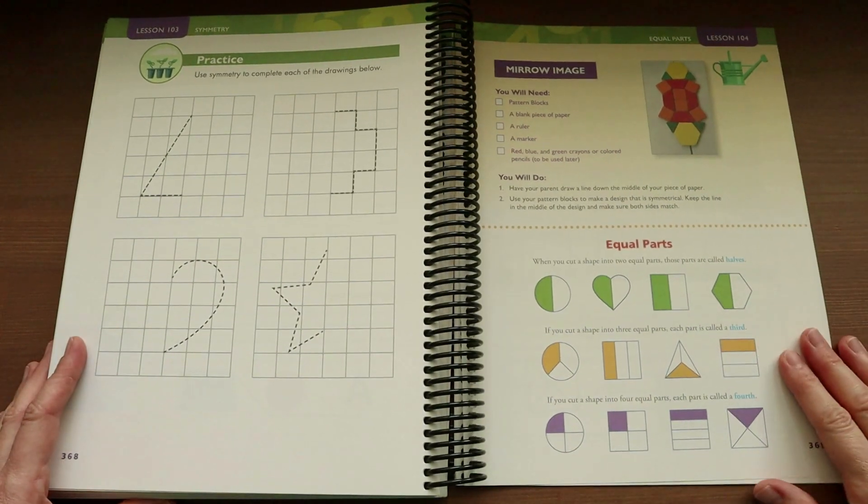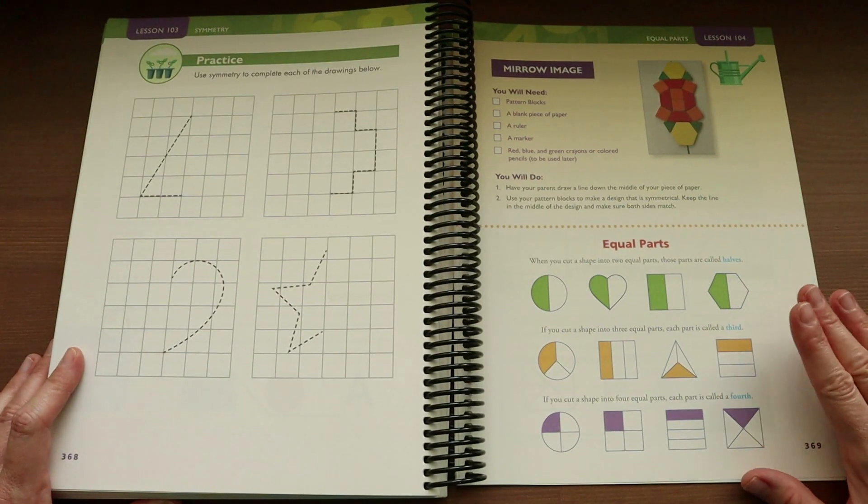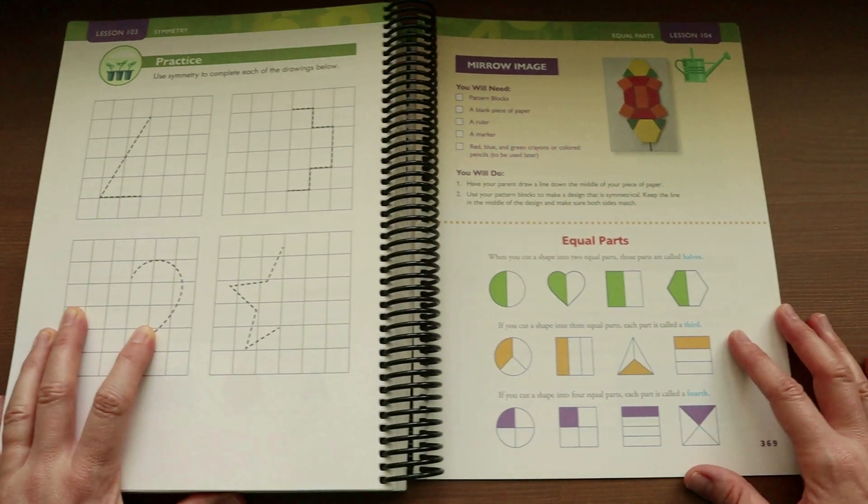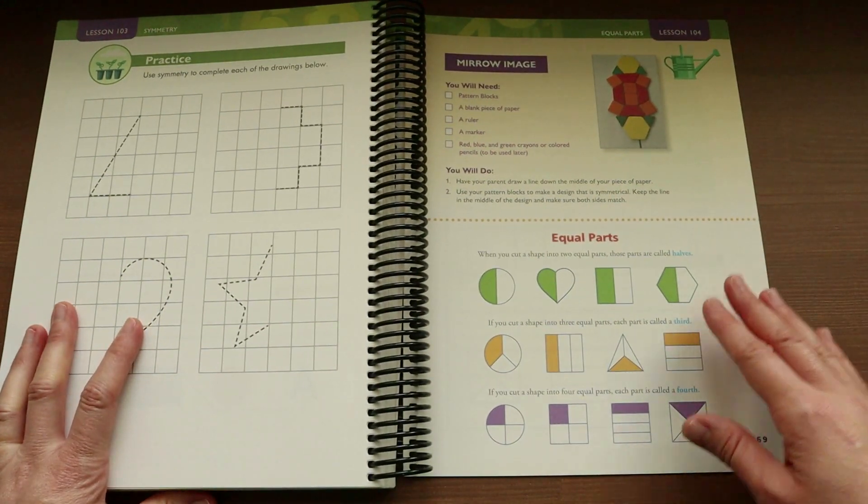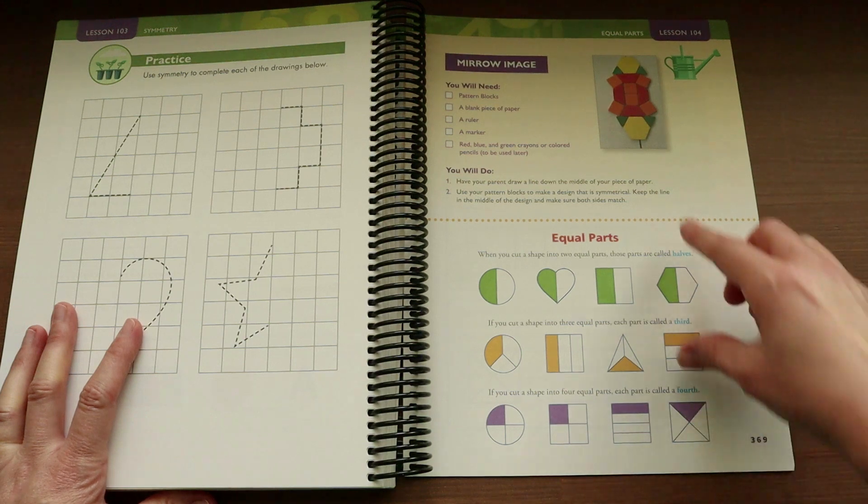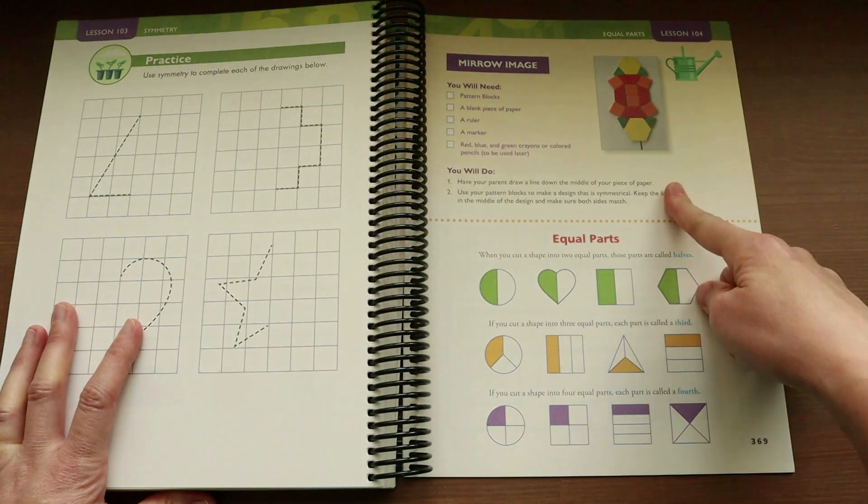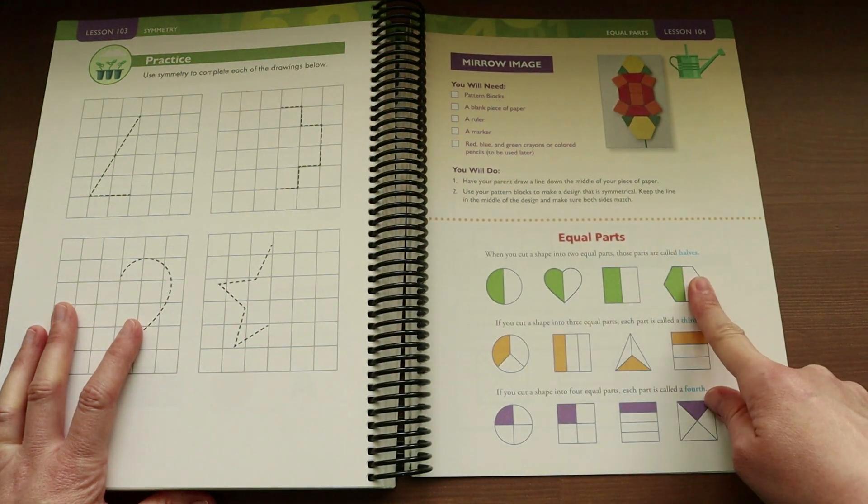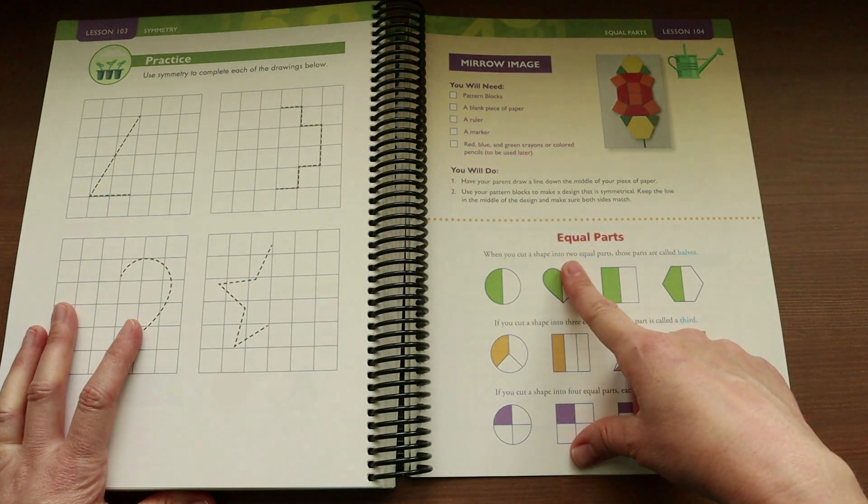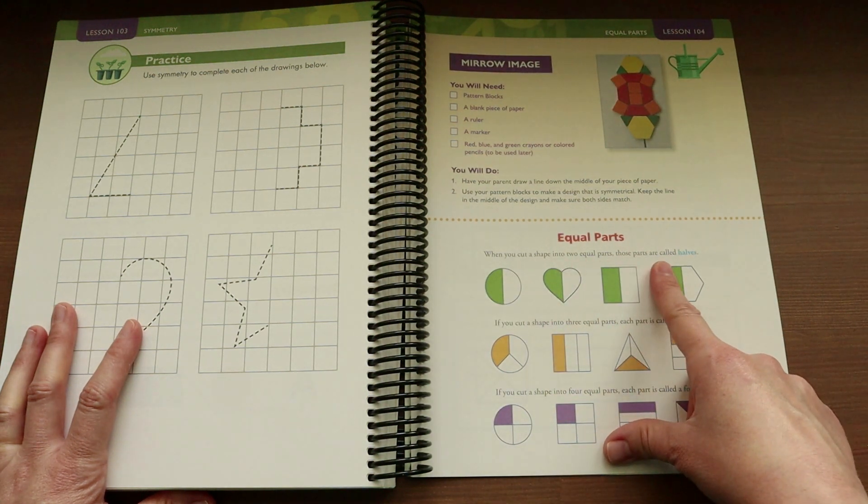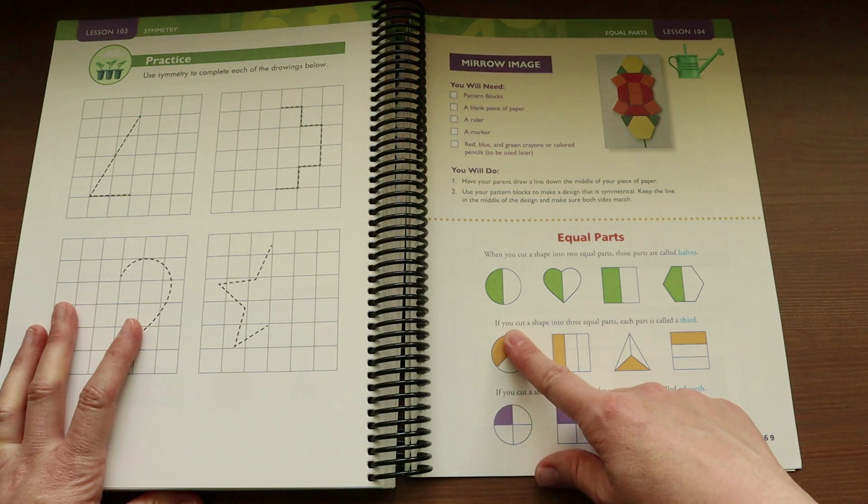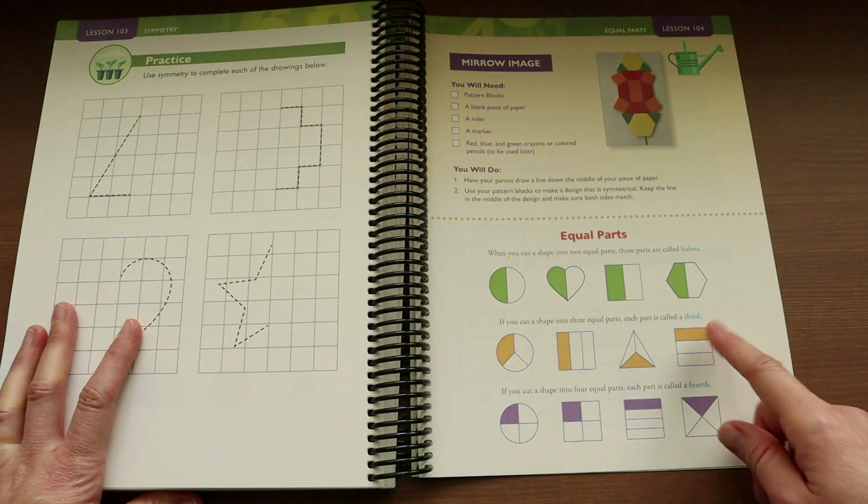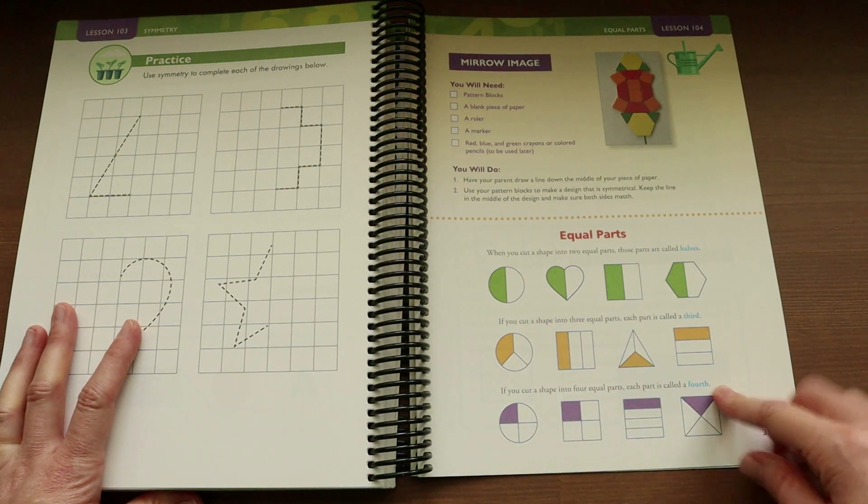This is one of the lessons towards the end of the book. In this section, they're going to be working all on geometry, equal parts, symmetry, things like that. This lesson, they're going to be working with equal parts. When you cut a shape into two equal parts, those parts are called halves. When you cut it into three equal parts, it's called a third. And then four equal parts is a fourth.